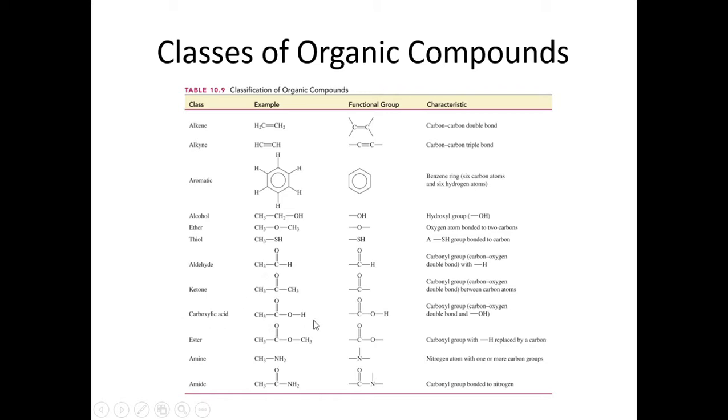We will see carboxylic acids. So this is the carboxyl group. Basically, we have a hydroxyl group and that carbonyl together. Esters. We will see esters in reactions or form in reactions. Amine groups, nitrogen with two or more carbon groups, and the amide bond, which we will definitely see in our amino acids and proteins. So make sure you are familiar with these classes of organic compounds.